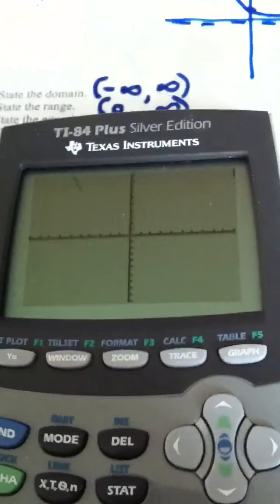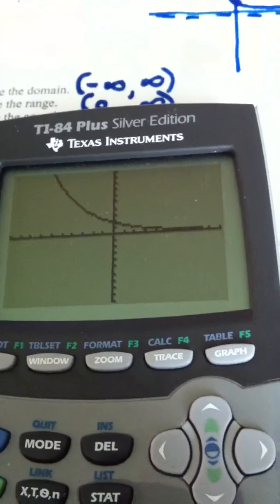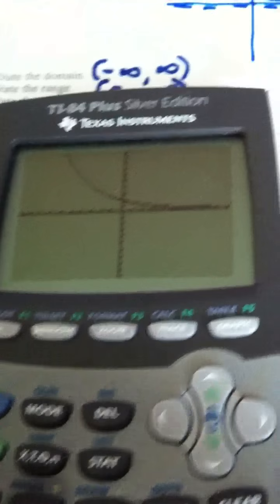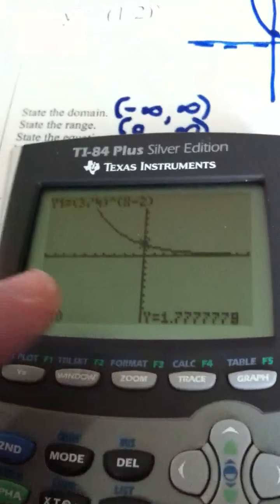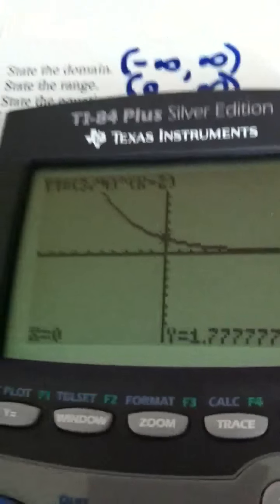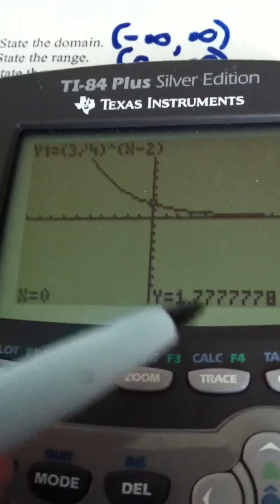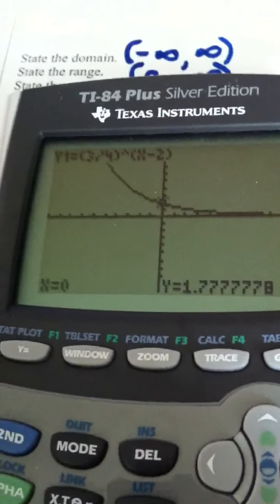Now, I hit graph, so I see I have a decay curve, not a growth curve, it's a decay. And if I hit trace, I can see that my y-intercept is approximately 1.8, so it's a little shy of 2.